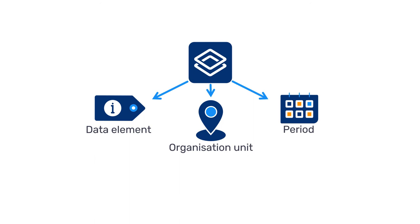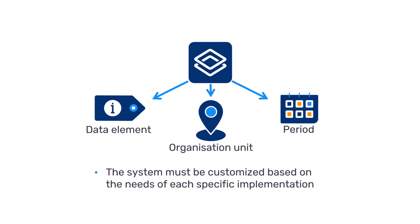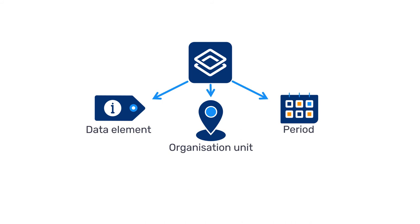Because the data model and feature set are purely generic — in other words, DHIS2 is not designed for one particular use case, but to be used for an unlimited variety of use cases — the system must be customized based on the needs of each specific implementation before it can be used. DHIS2 allows you to configure its metadata and structure without the need for programming skills.